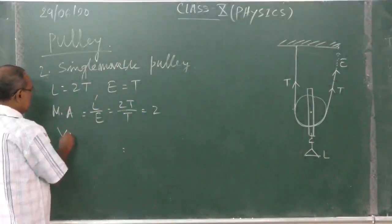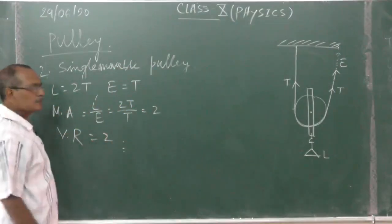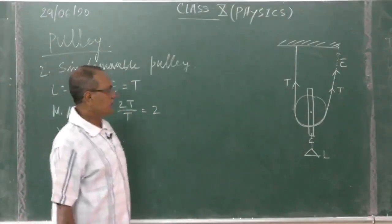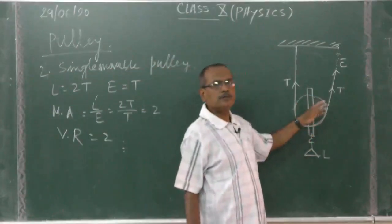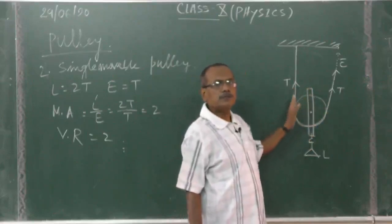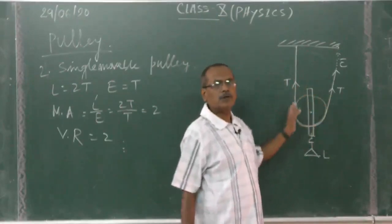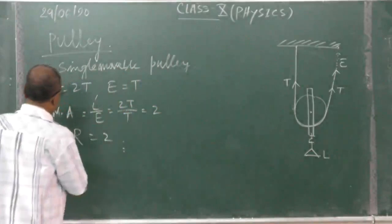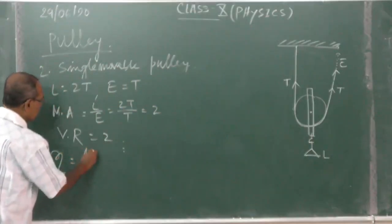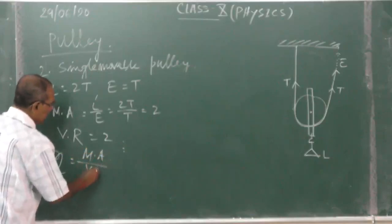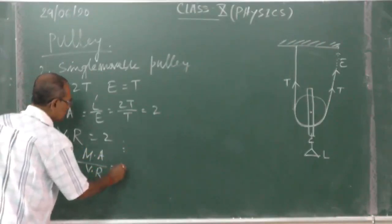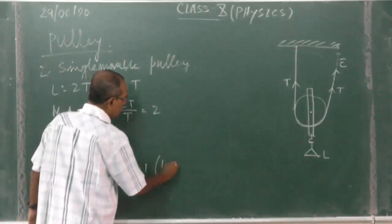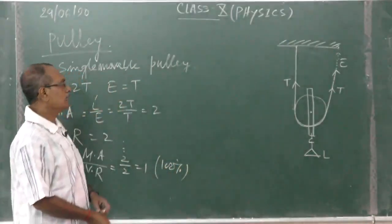Here again velocity ratio is equal to again 2. We are doing here by using ideal case, but in all cases there is friction, load of pulley, but we are considering here pulley is weightless, rope is weightless and all movable parts are frictionless, but it is not in actual fact. Now, efficiency is equal to MA by VR, that is equal to again 2 by 2, that is equal to 1, but in actual practice it will be less than 1 or 100 percent.